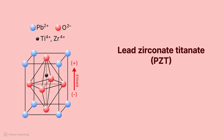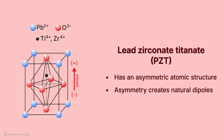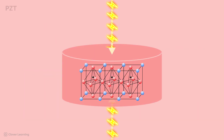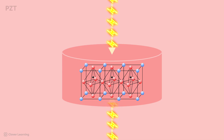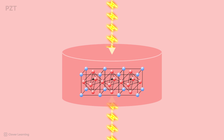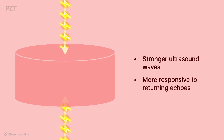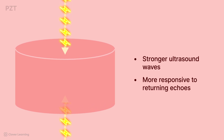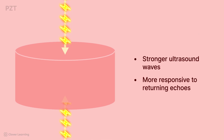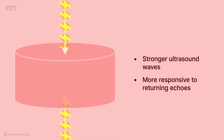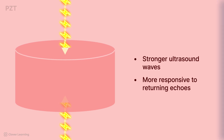This is because PZT has an asymmetric atomic structure. This asymmetry creates natural dipoles, or regions of positive and negative charge, within the material. When an alternating electrical current, or AC, is applied to the crystal, the electric field interacts with the dipoles, causing them to align or shift within the crystal lattice and distort or deform the crystal. The alternating current stimulates the crystal to repeatedly expand and contract in response to the changing electric field. This quality of the piezoelectric effect creates stronger ultrasound waves and makes it more responsive to the returning echoes.